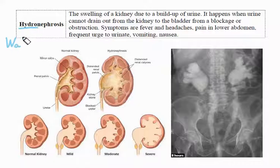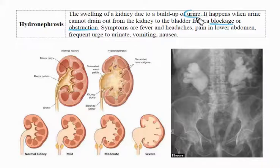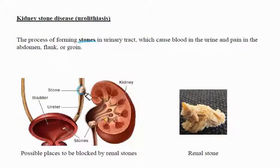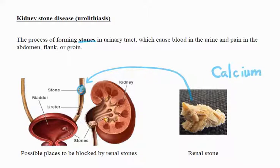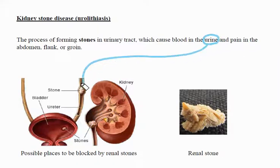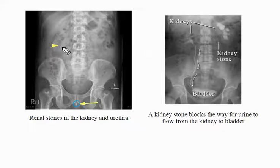Hydronephrosis is a condition where urine is trapped in the system because it will not flow downstream in some regions. The cause can be stones, inflammation, and so on. Kidney stones can block urine from flowing and even cause it to flow backward and be held in the system, making the system swollen. The process of forming stones in the urinary tract can cause blood in the urine and pain in the abdomen, flank, or groin.